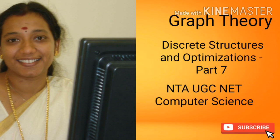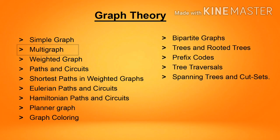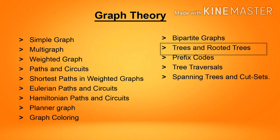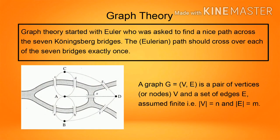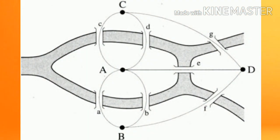Hello friends, welcome back to my channel. Today we are going to discuss graph theory: simple graph, multi-graph, weighted graph, path and circuit, shortest path in weighted graph, Eulerian path and circuit, Hamiltonian path and circuit, bipartite graph, graph coloring, trees and rooted trees, prefix codes, tree traversals, spanning trees, and cut sets. Graph theory started with Euler, who was asked to find a nice path across the seven Königsberg bridges. The Eulerian path should cross over each of the seven bridges exactly once.